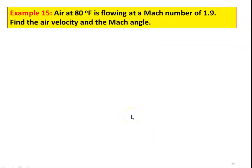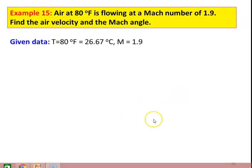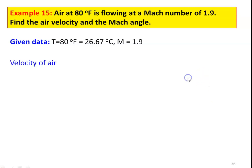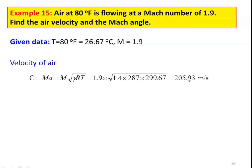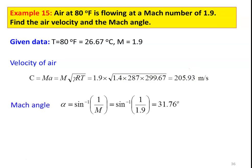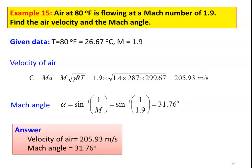Example 15: Air at 80°F (26.67°C, i.e., 299.67 K) flowing with a Mach number of 1.9. Find the air velocity and the Mach angle. Velocity: C = M × A = M × √(γRT) = 1.9 × √(1.4 × 287 × 299.67) = 205.93 m/s. Mach angle: α = sin⁻¹(1/M) = sin⁻¹(1/1.9) = 31.76°. Answers: velocity = 205.93 m/s, Mach angle = 31.76°.